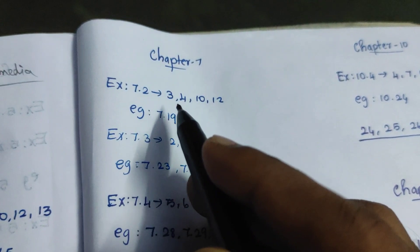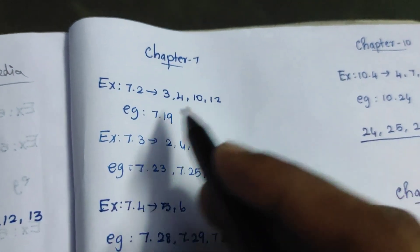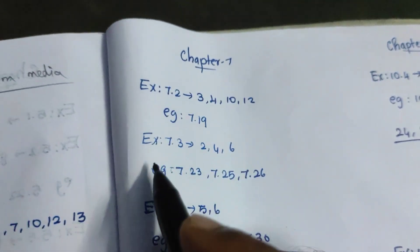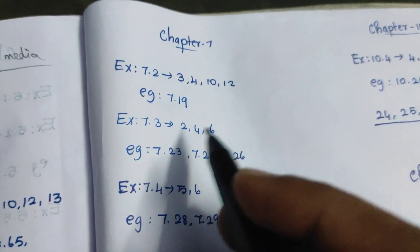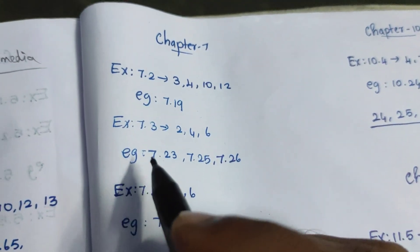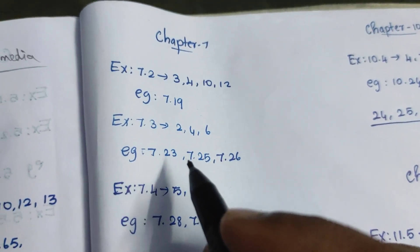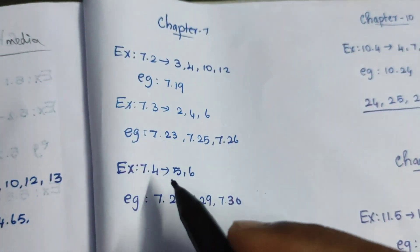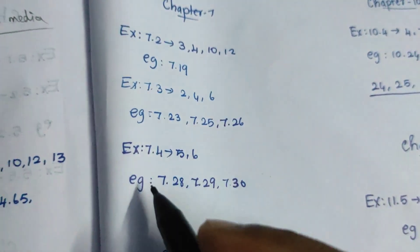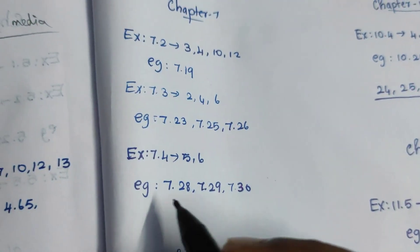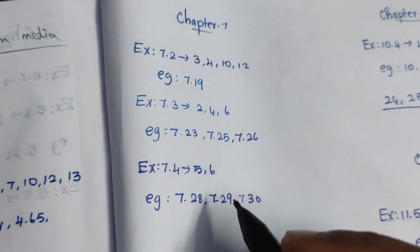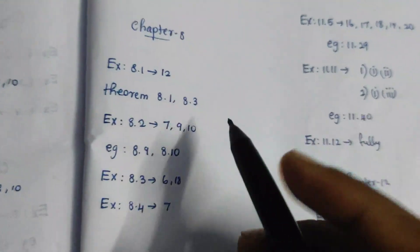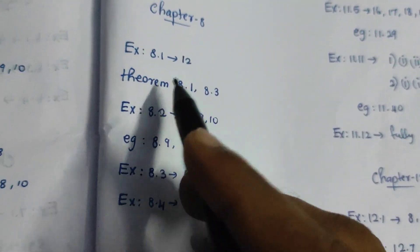We will see the seventh chapter. Exercise 7.2: 3, 4, 10, 12. Exercise 7.19. Exercise 7.3: 2, 4, 6. Exercise 7.23, 7.25, 7.26. Then Exercise 7.4: 56. And Exercise 5.26, 7.23, 7.28, 7.29, 7.30. That is the seventh chapter.